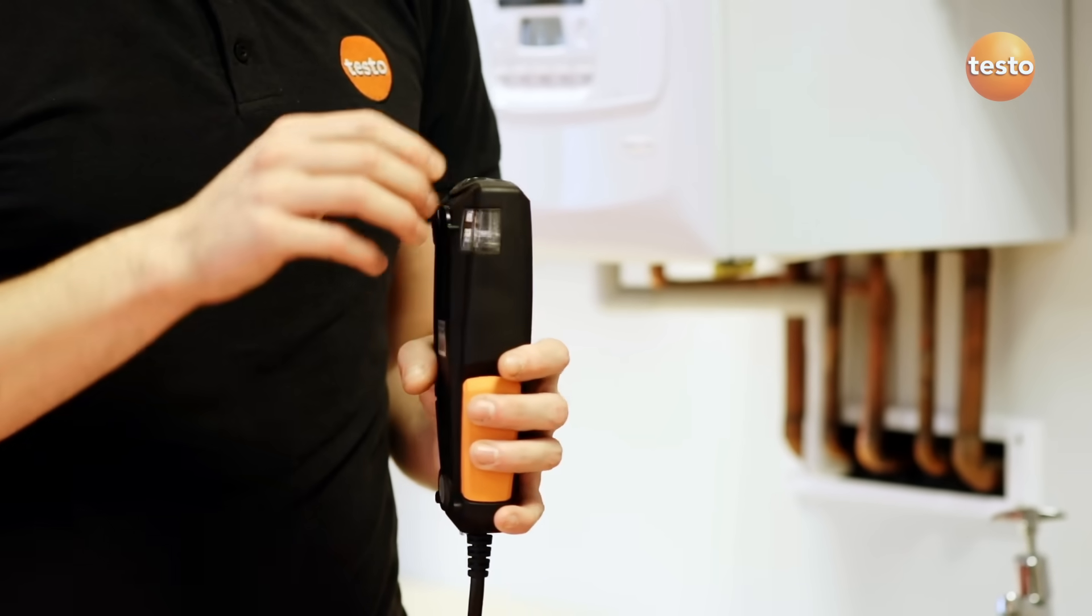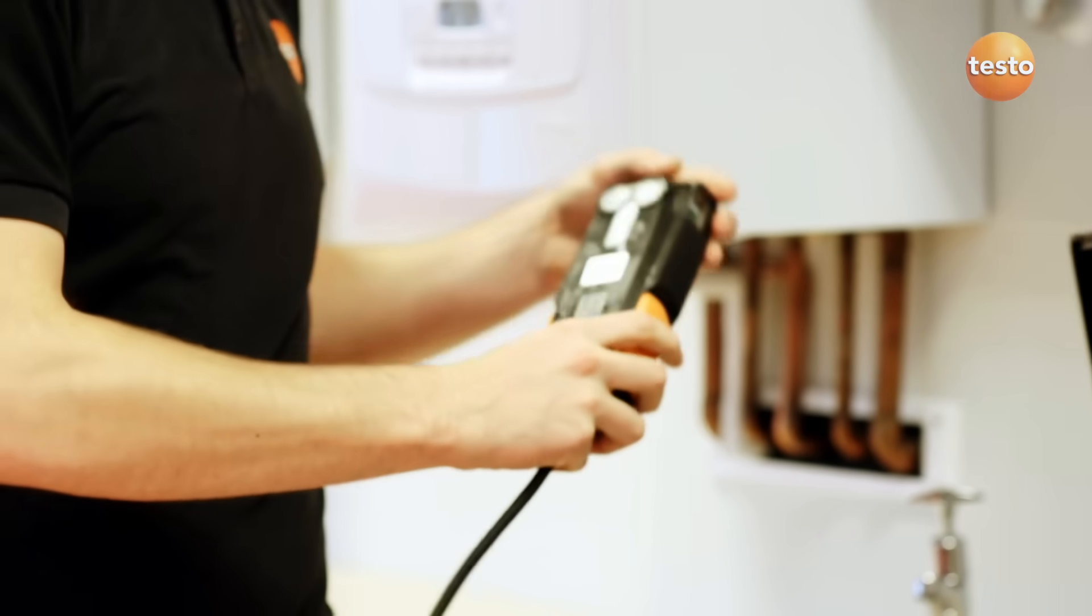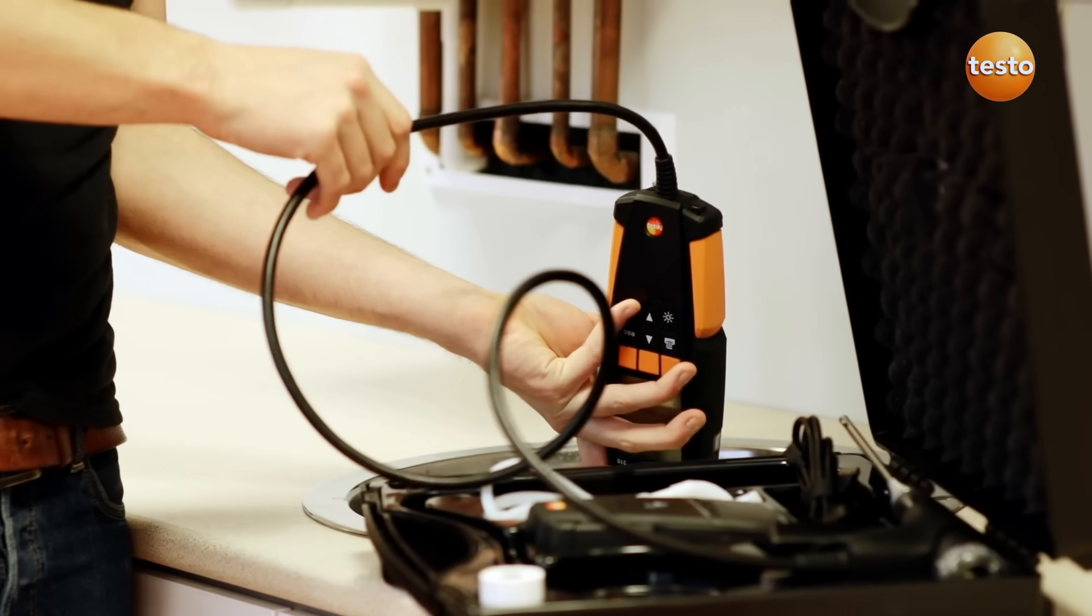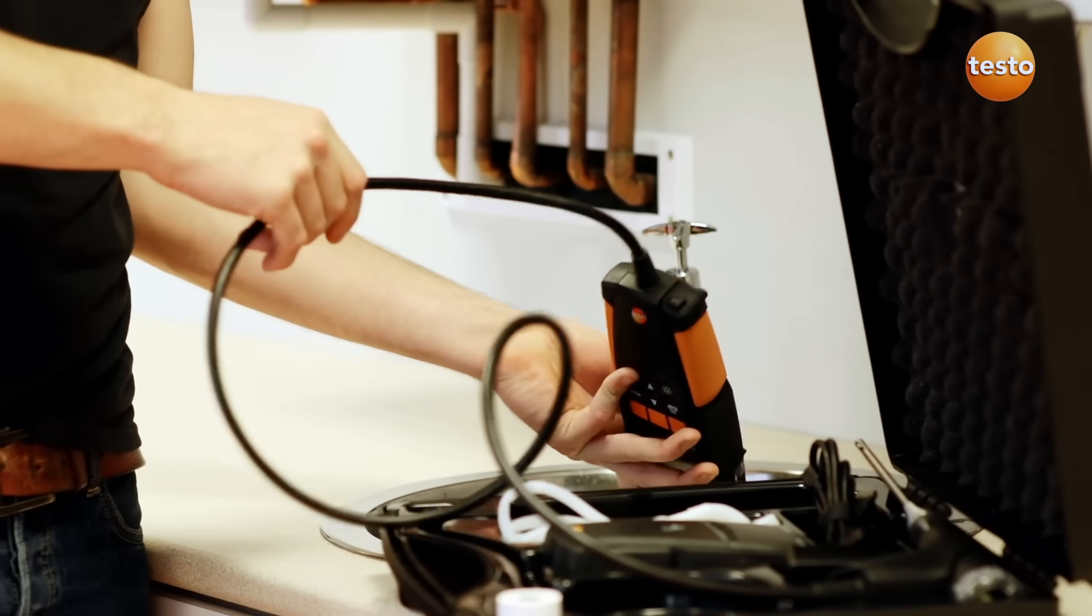Remember to always check and empty the condensate trap before measuring. Once empty, make sure the plug is pushed back in so there is no air leakage into the measuring instrument.